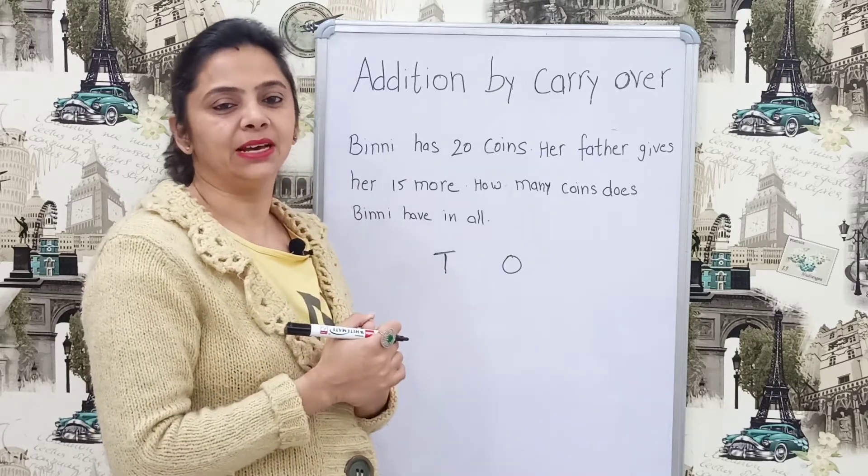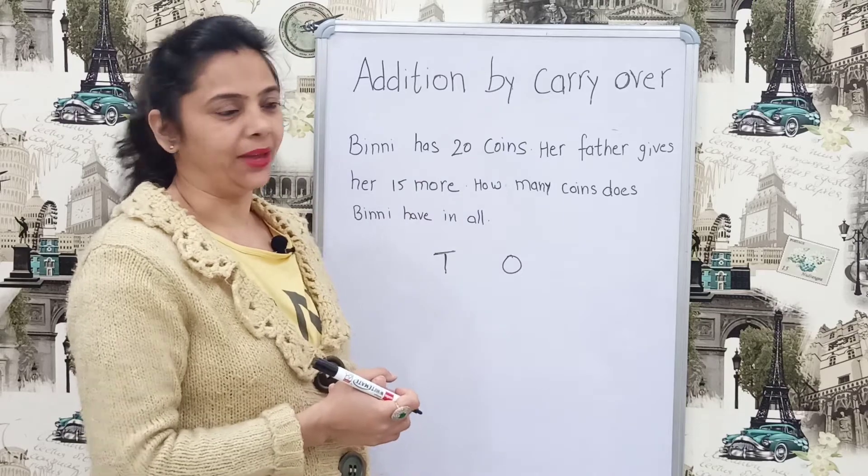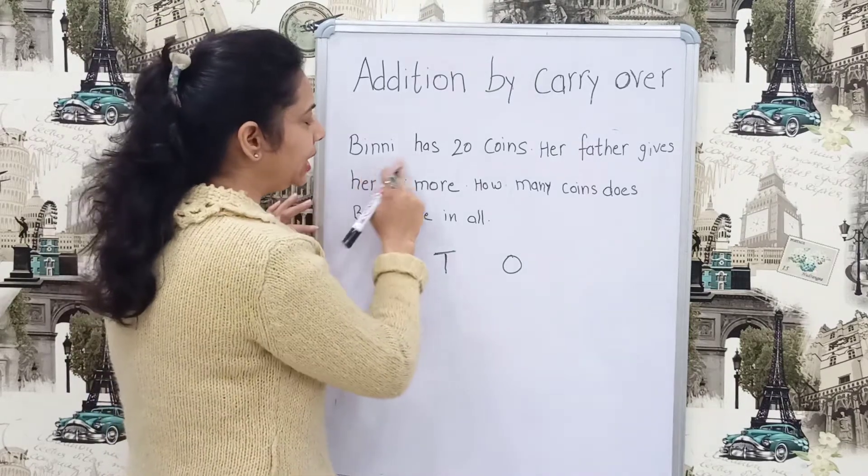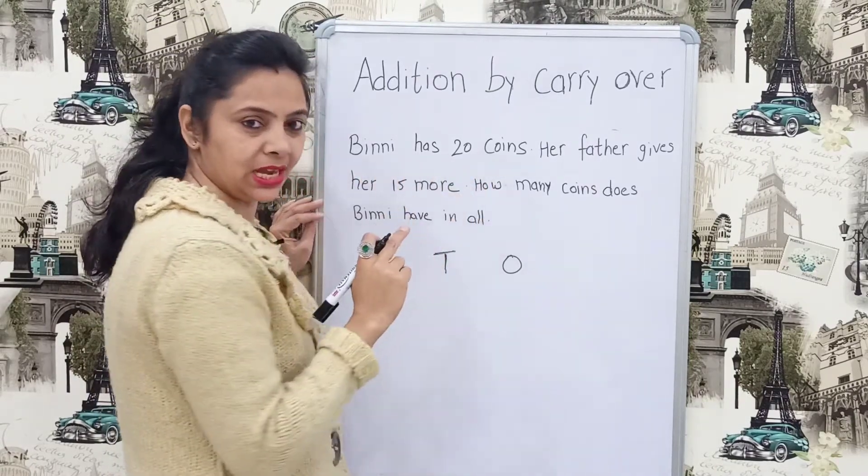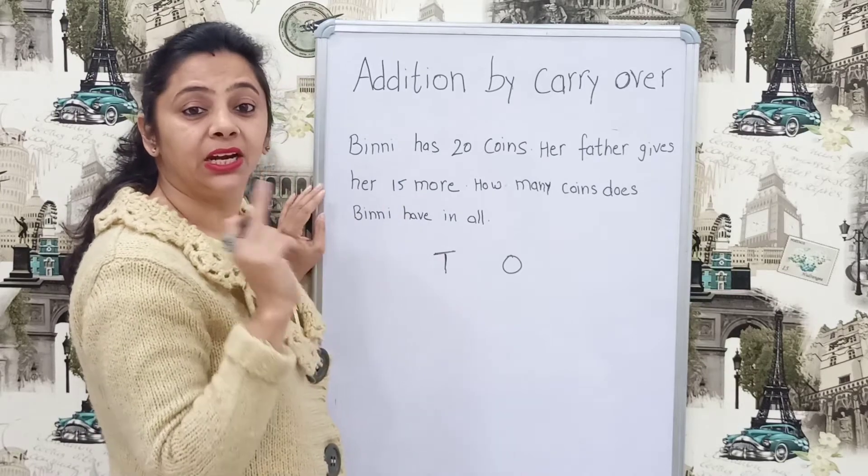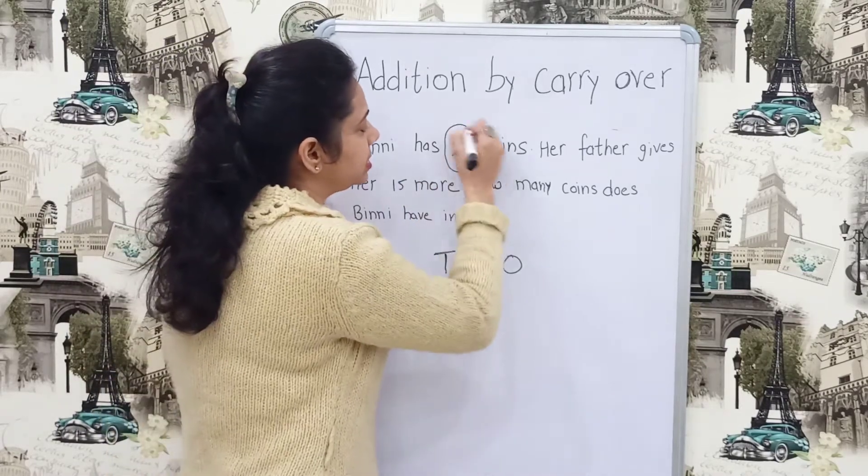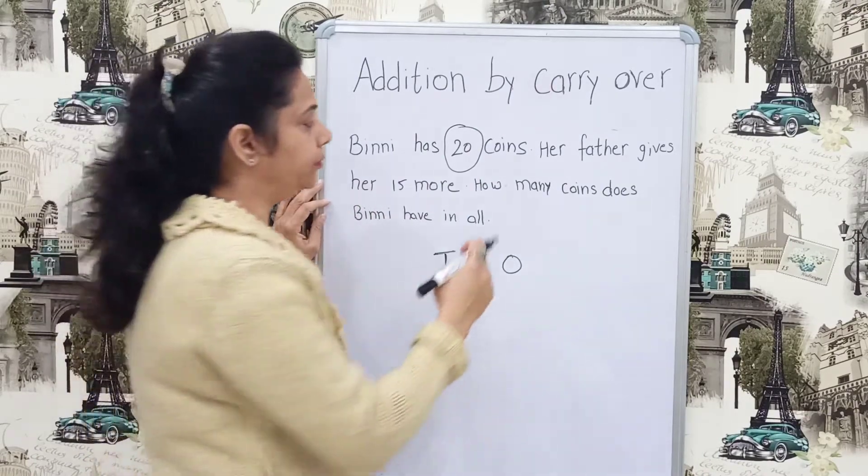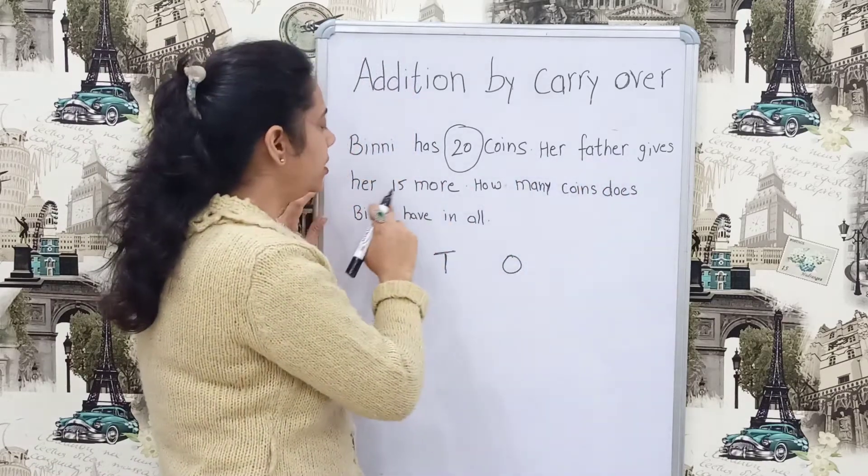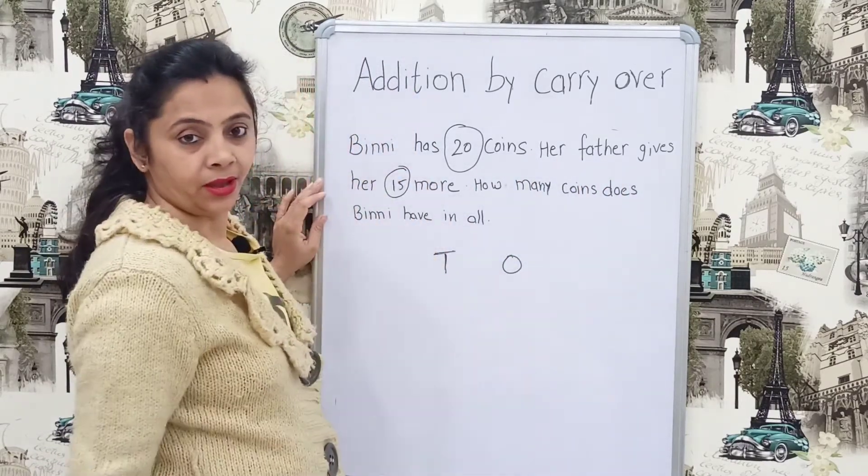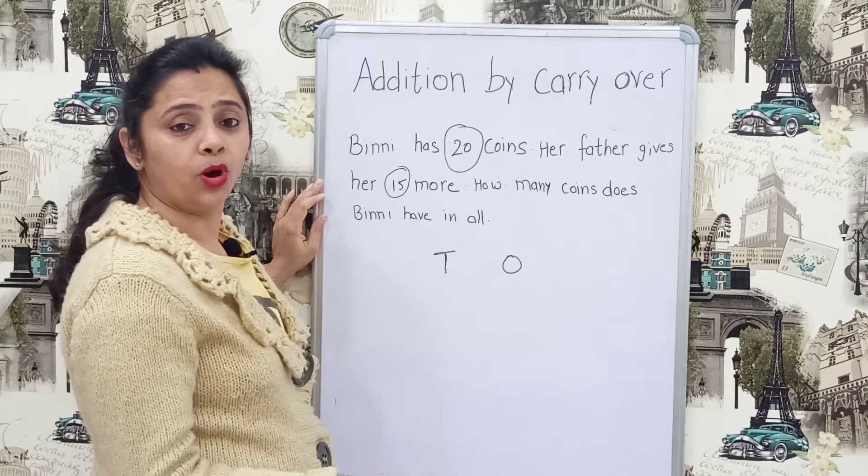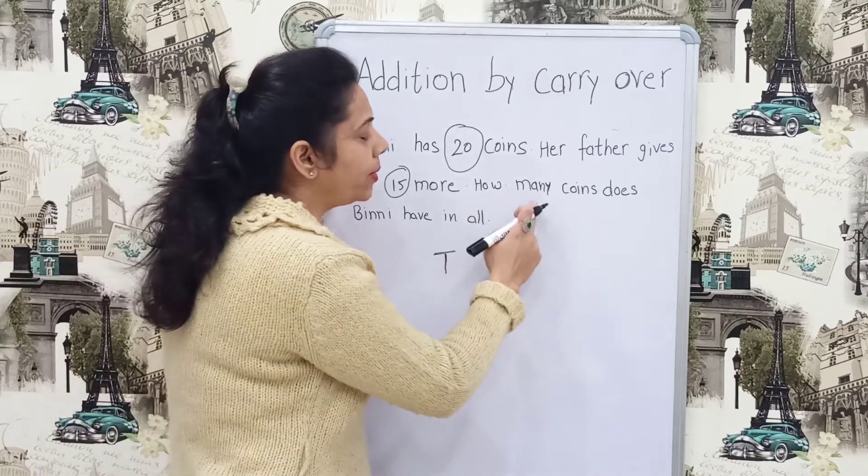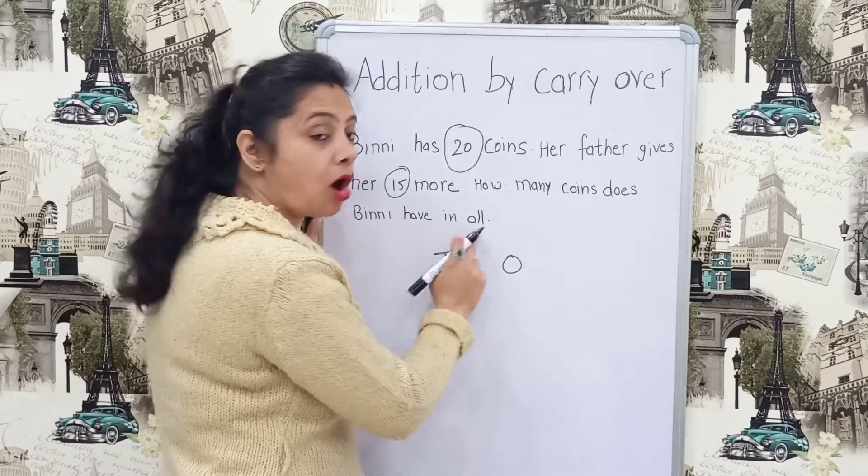Okay children, after understanding 2 digit numbers of carried over, now we will solve word problems. Word problems means some statements are given to you. You have to read it very carefully and then just write the sum and solve that. Something new is there. No problem, if you will practice for these sums, you will solve it easily. Just read question with me very carefully. Binny has 20 coins. How many coins are there? 20 coins, just circle this number. Her father gives her 15 more.